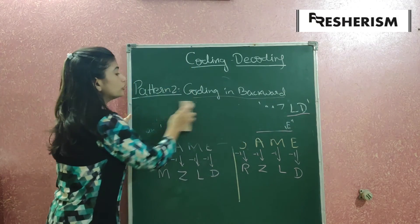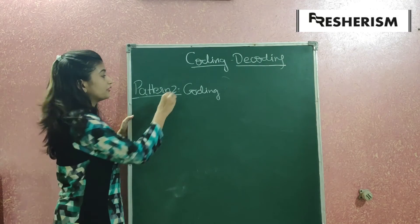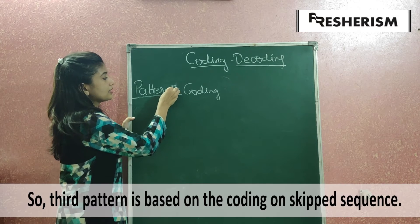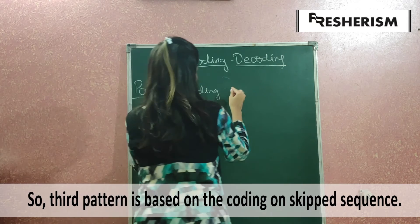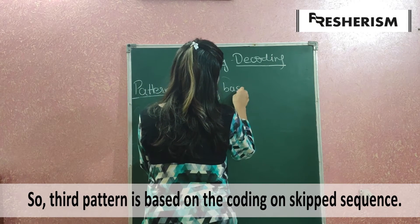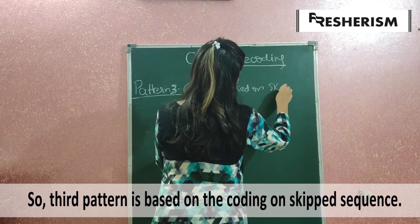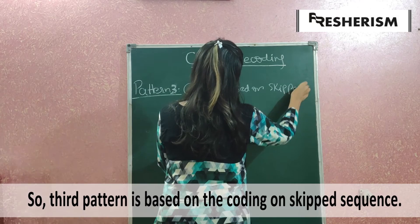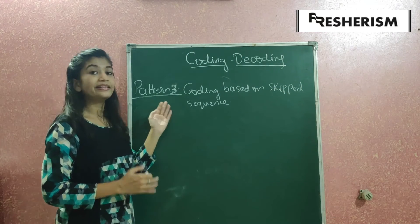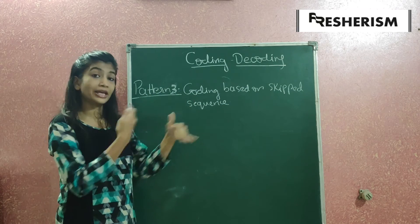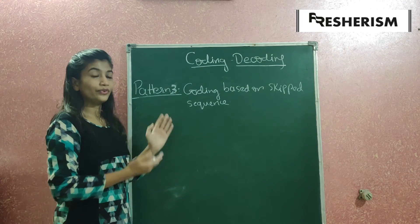Now let's move to our third pattern. The third pattern in Type 1 is coding based on skipped sequence. We will see this pattern with one example.